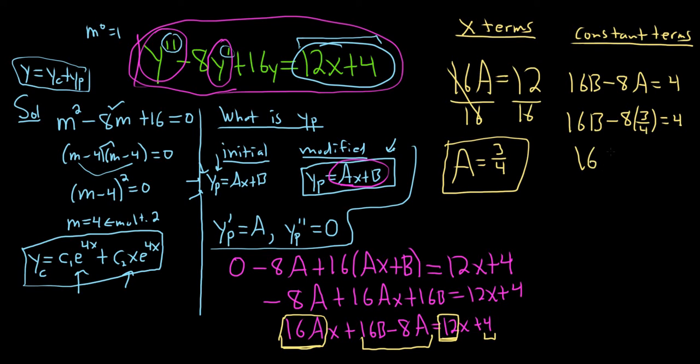So 16b, 4 goes into 8 twice, 2 times 3 is 6, and that's equal to 4. Then adding 6 to both sides, it's going to give us 16b is equal to 10.